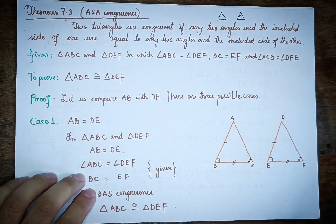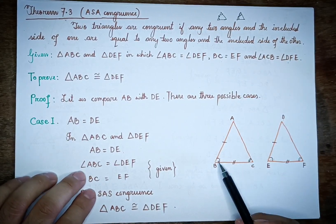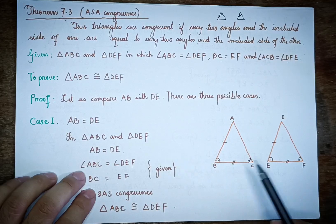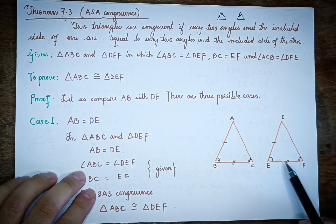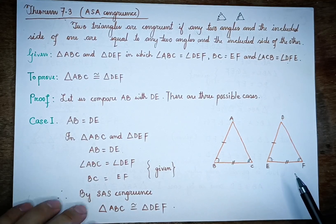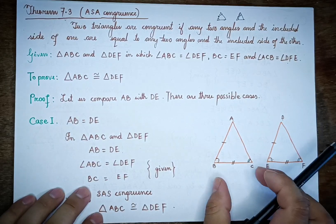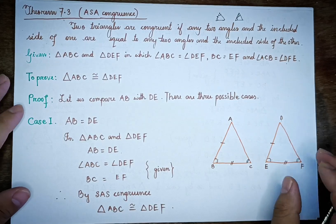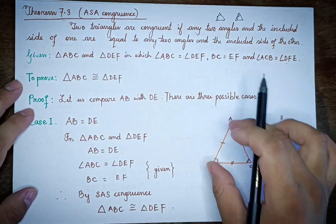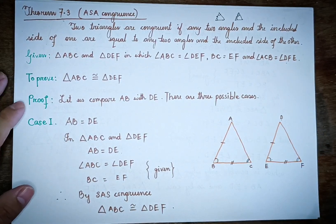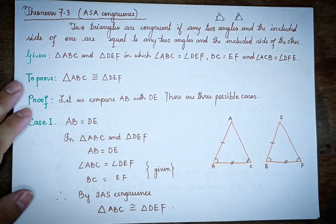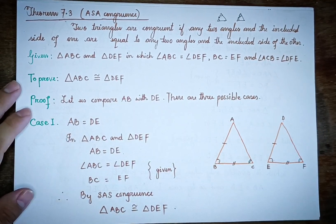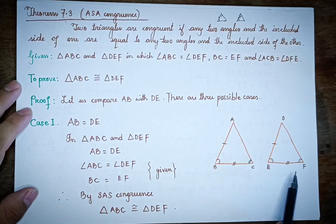In this case, we have AB equal to DE, BC equal to EF, and angle ABC equal to angle DEF. By SAS congruence, the triangle ABC is congruent to triangle DEF. Case 1 is complete.